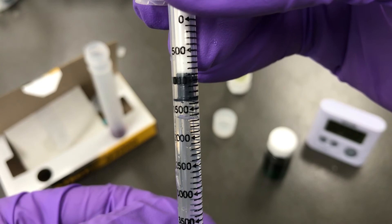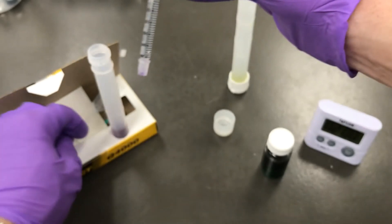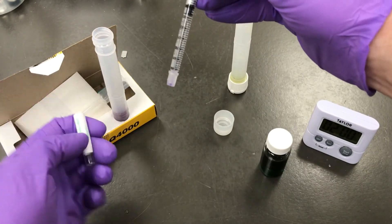Now you can unscrew the titration burette and read the results right off the side of the burette. You want to read the results from the bottom of the black plunger. You can see that this particular test is about 1400 parts per million.